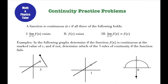At the top here we have our definition of a continuous function. A function is continuous at C if all three of the following are true: the limit as x approaches C must exist, f of C must exist, and the limit as x approaches C of f of x must equal f of C. We're going to be using this definition in the examples.